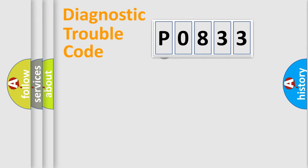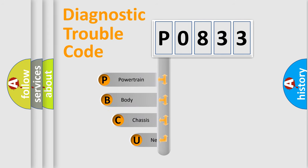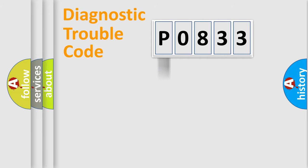First, let's look at the history of diagnostic fault code composition according to the OBD2 protocol, which is unified for all automakers since 2000. We divide the electric system of an automobile into four basic units: Powertrain, Body, Chassis, and Network. This distribution is defined in the first character of the code.